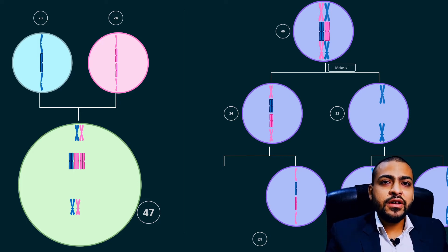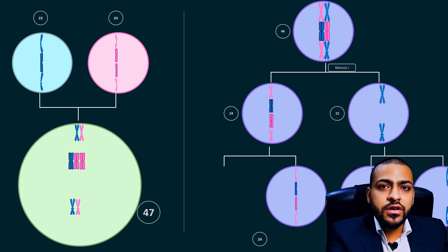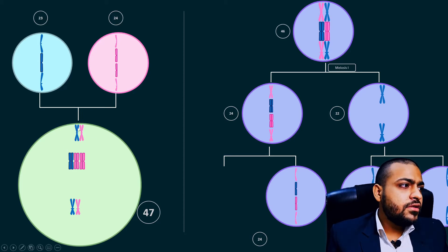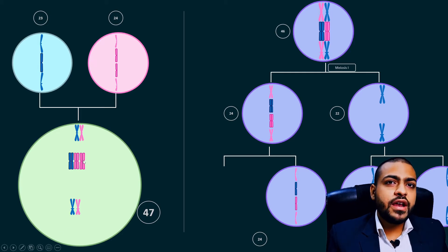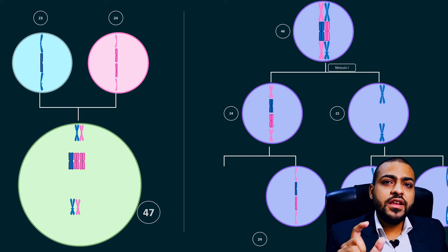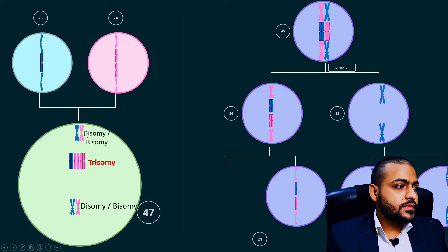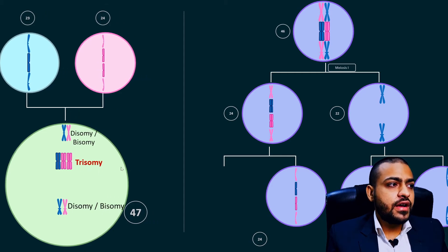The suffix 'somy' comes from 'chromosome.' Rather than normal disomy as in all other chromosomes, here we are having trisomy. Tri means three — so trisomy means three chromosomes, whereas normally they should be disomy.